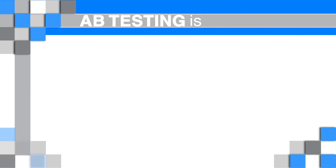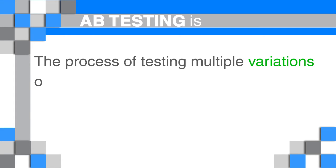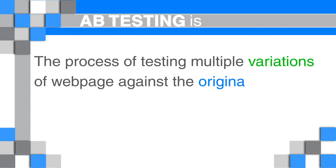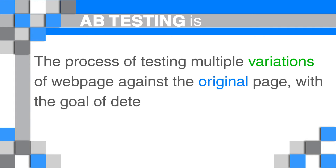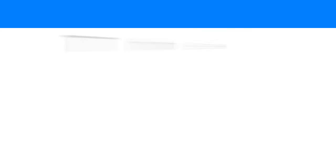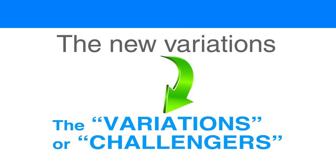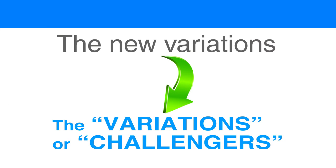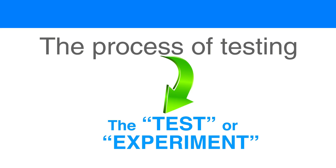A-B testing, sometimes referred to as split testing, is the process of testing multiple possible variations of a webpage against the original design of a page, with the goal of determining which page generates more conversions. The original design of a page is usually referred to as the control. The new variations are usually referred to as variations or challengers. The process of testing which page generates more conversions is typically referred to as a test or an experiment.